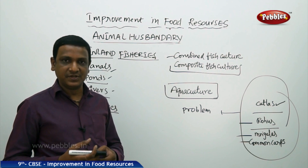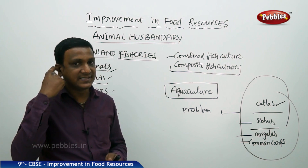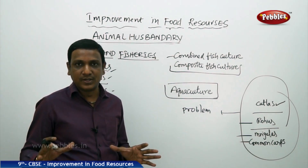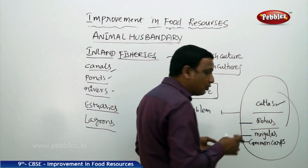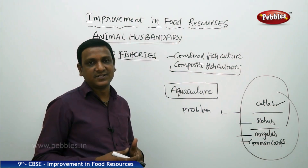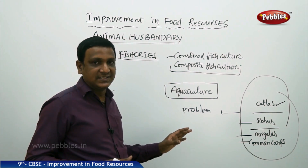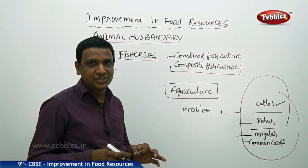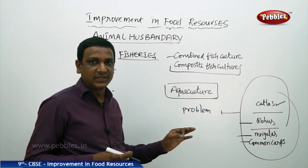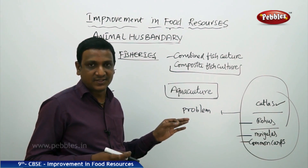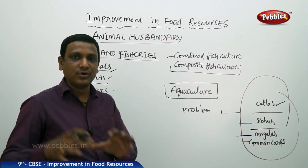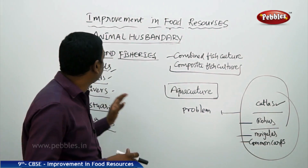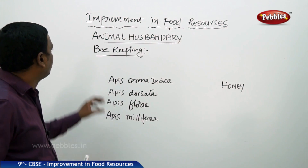This method allows collection of pure seed — that is, seed not mixed with other species. From the wild or a natural pond, people cannot collect the seed of just one species, because even wild seed is mixed with different species. With hormonal stimulation, a specific fish is selected, injections are given, its seed is collected, and that particular species is grown individually. This is about the inland fisheries.